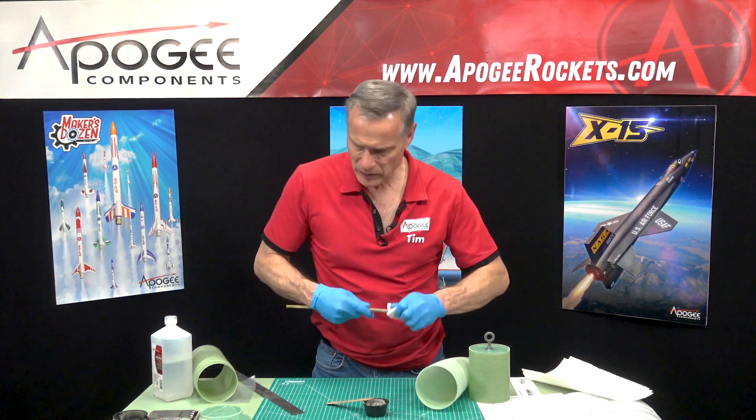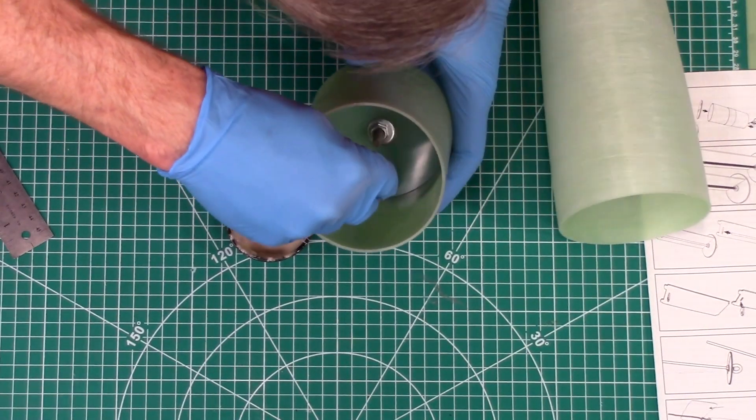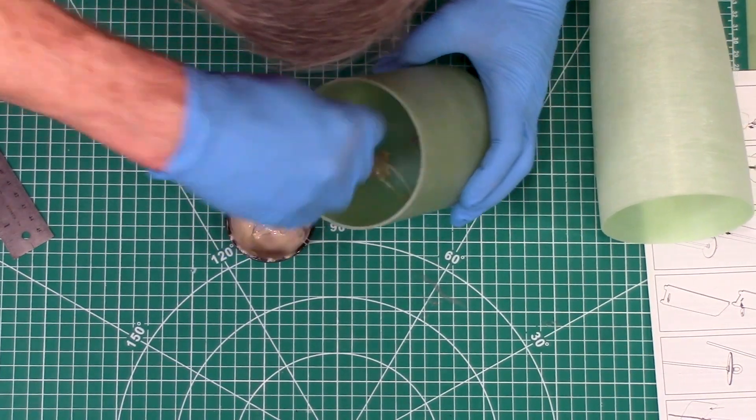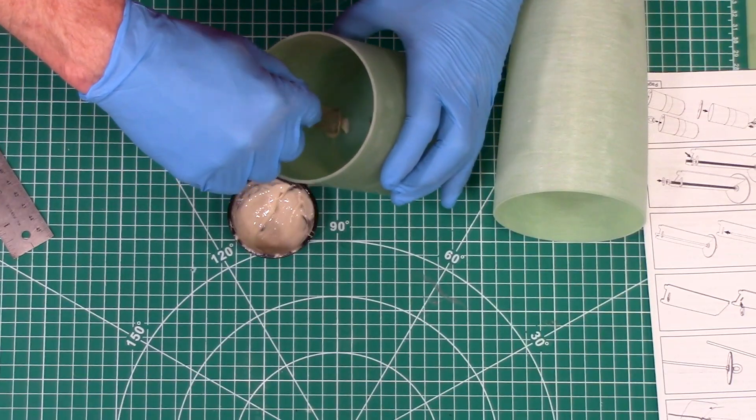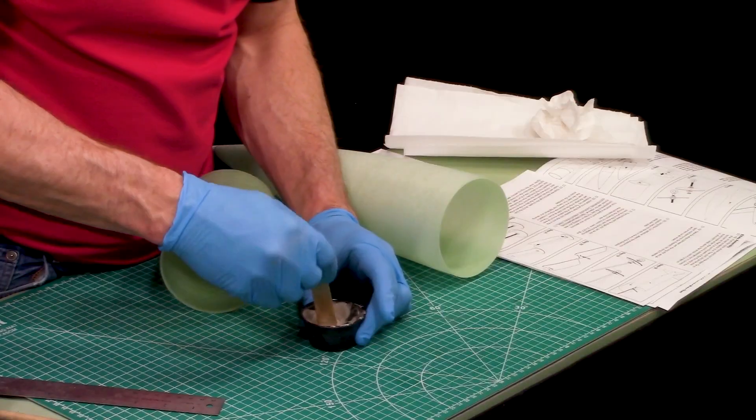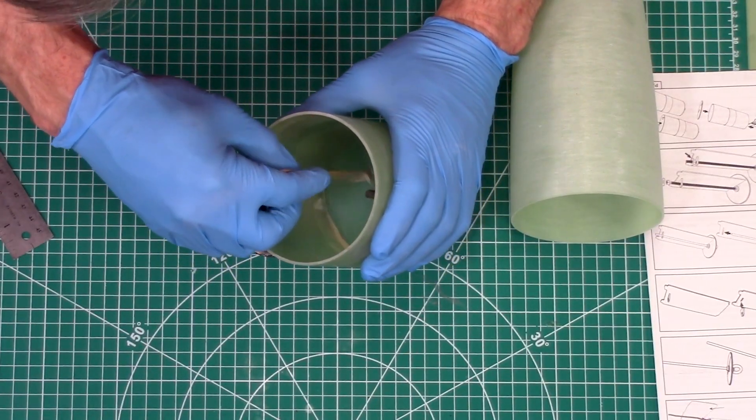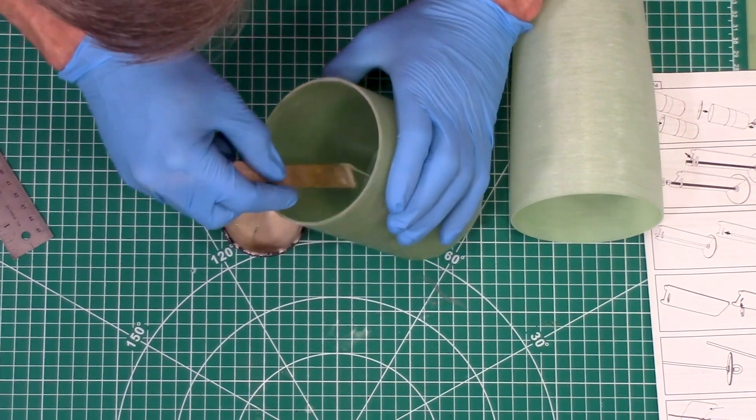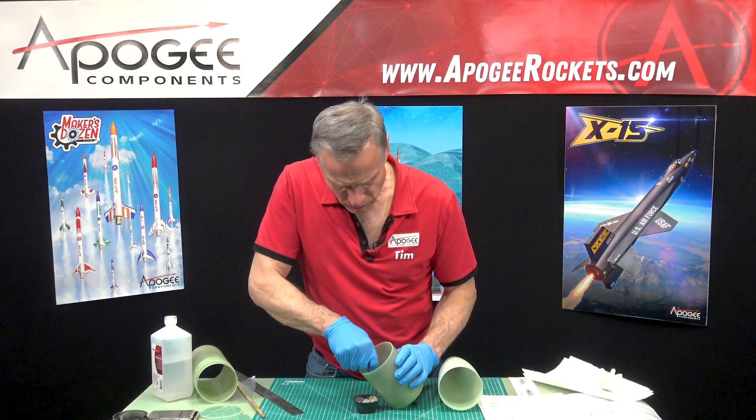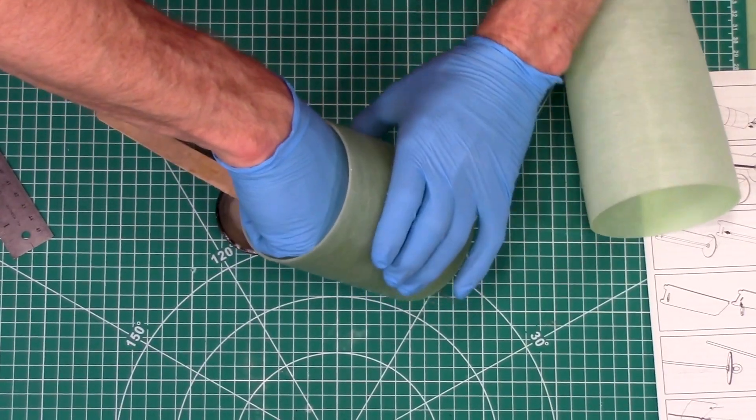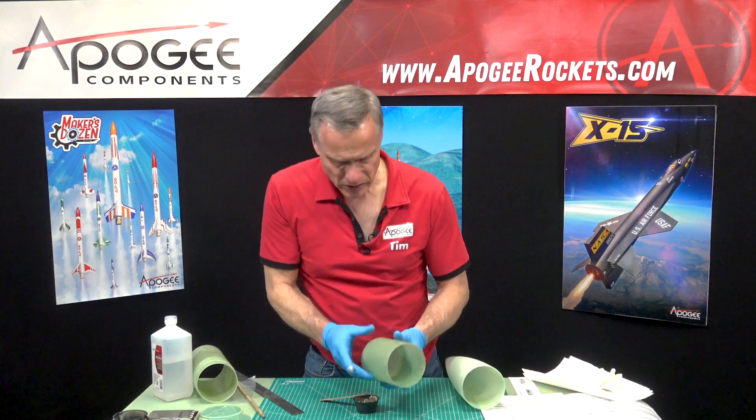Now I want to take some epoxy and put a fillet on the inside of this. I'm just dabbing it around, and I should be able to get my finger in there to smooth it out. I said before that I'm going to put some on the threads on that eye bolt so that stays in there permanently. I have it in there and I'm just going to smooth it out with my finger. That looks beautiful.